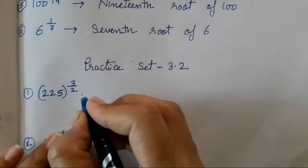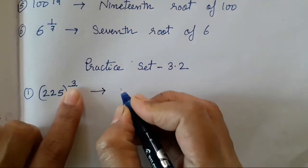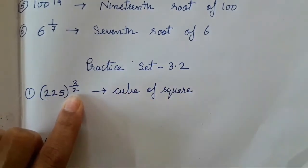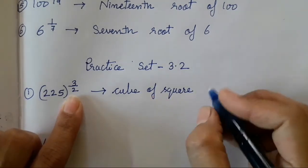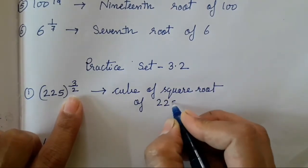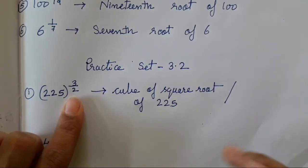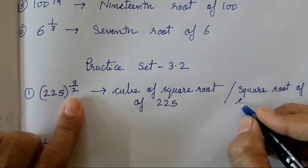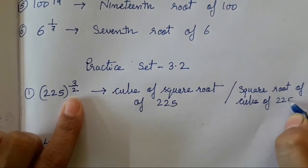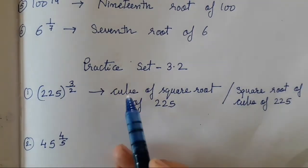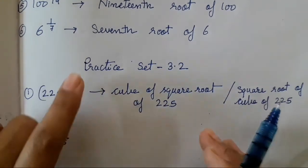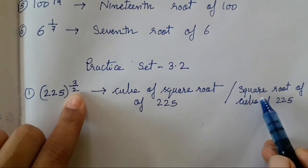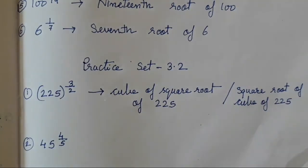For the number 225 with index 3 upon 2 — first we write the power of the root: since 3 means cube and 2 means square root, it is cube of square root of 225. Then the root of the power, which is the reverse: square root of cube of 225.